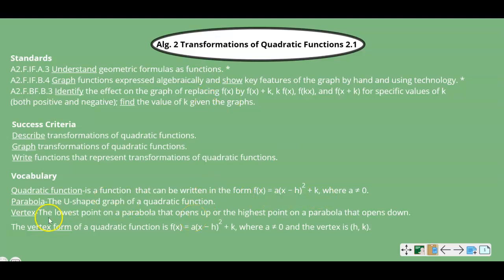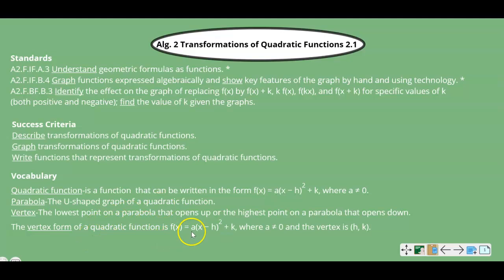A parabola is a u-shaped graph of a quadratic function. The vertex is the lowest point on a parabola that opens up, or the highest point on a parabola that opens down. And vertex form of a quadratic function is f(x) = a times (x minus h) quantity squared plus k, where a is not equal to zero, and the vertex is (h, k).